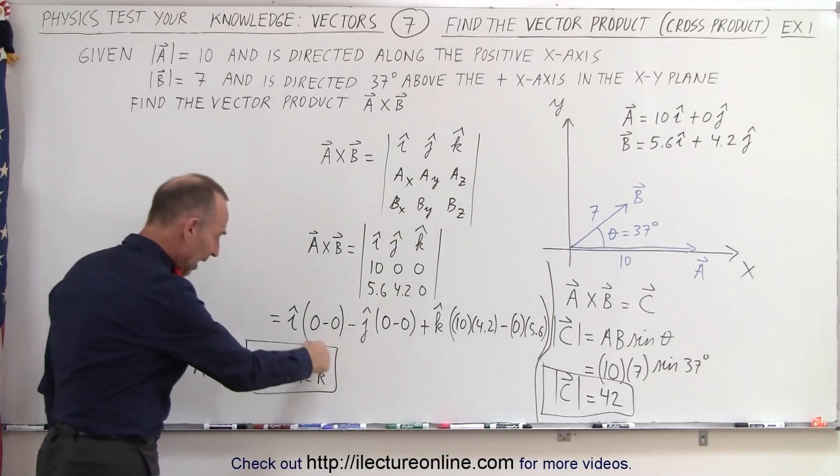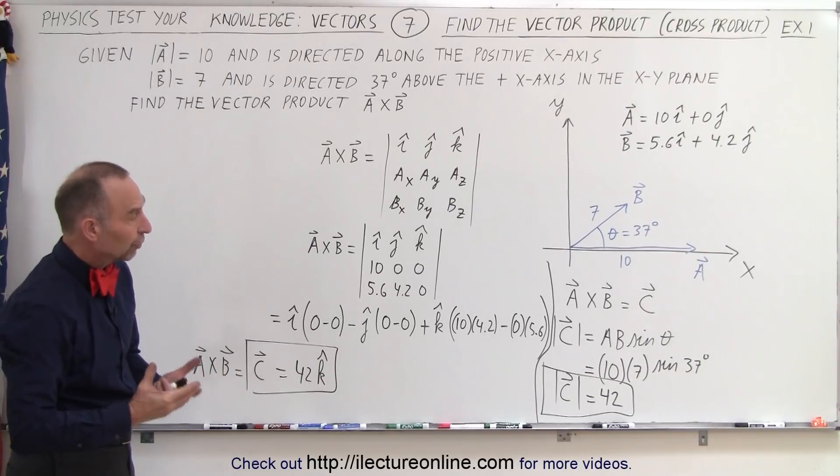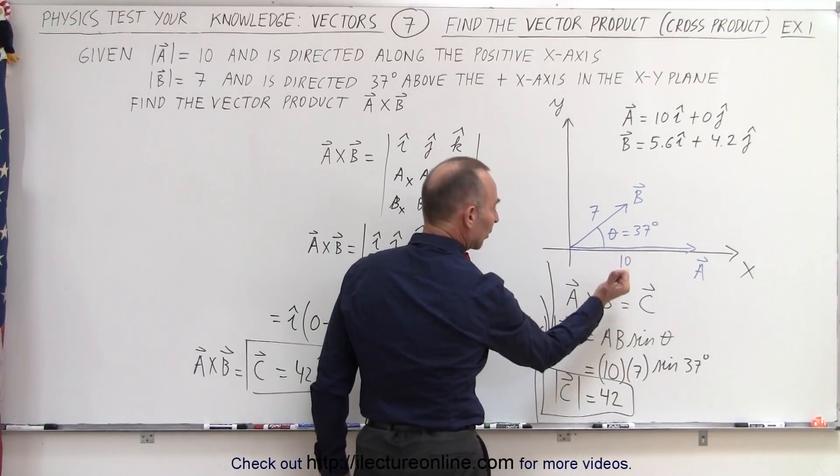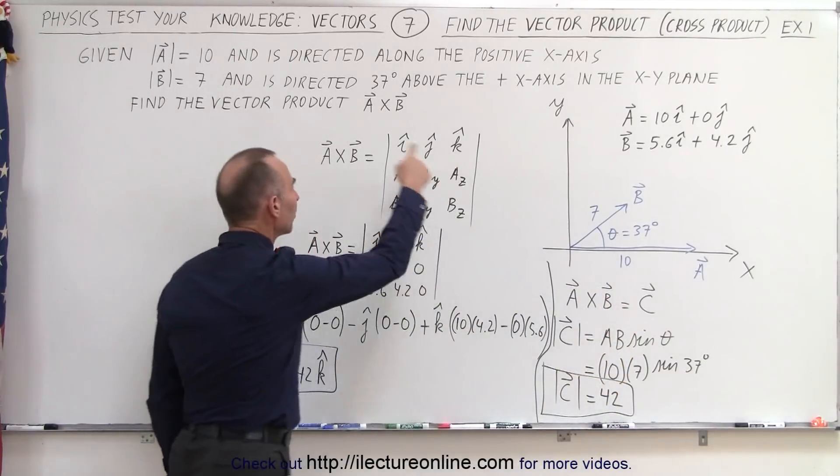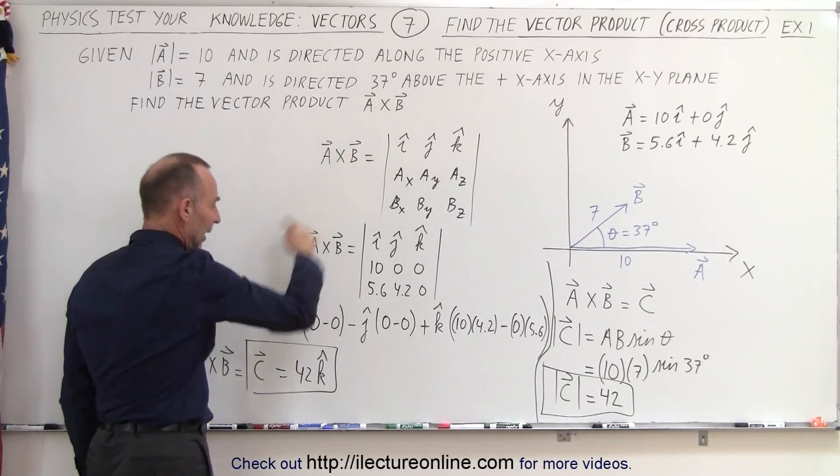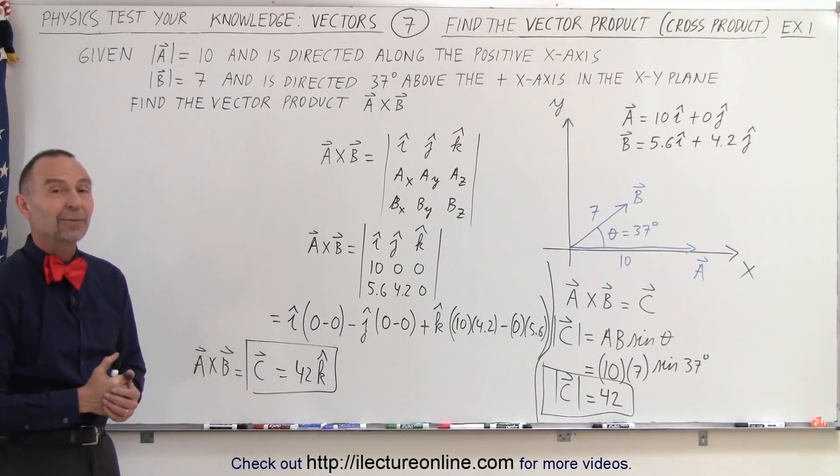We realized by using the right-hand rule that the direction of that product would be in the Z direction, which is what we have indicated over here. So notice, to get the cross product or the vector product, we can find the magnitude using this equation and then getting the direction using the right-hand rule. Or we can simply perform the cross product or the vector product and we end up with the same result. And that is how it's done.